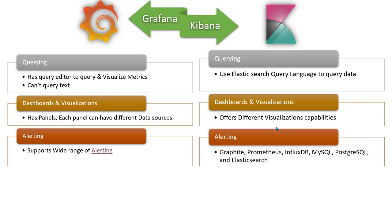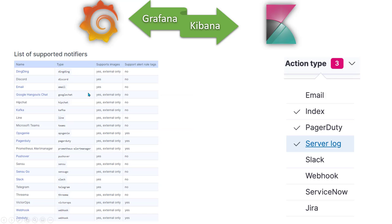Grafana supports many different types of alerting. For example, if memory utilization goes over a certain threshold, you can trigger alerts to a wide variety of notification channels. Looking at the list, Grafana supports DingDong, Discord, Email, Google Hangouts, Kafka, and many others — you name it and Grafana supports it. Kibana, on the other hand, only supports a limited number of notifiers, primarily email, which is enough for most cases.